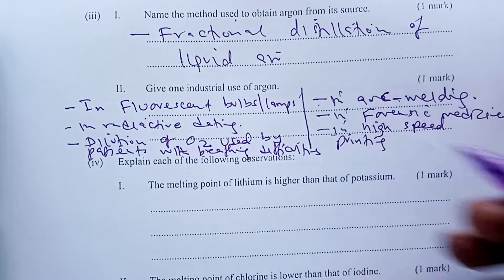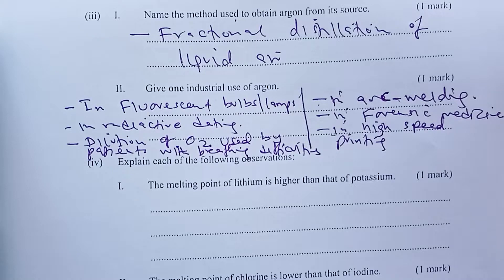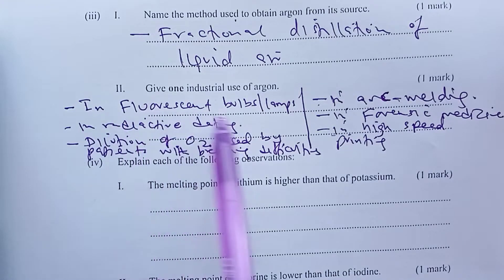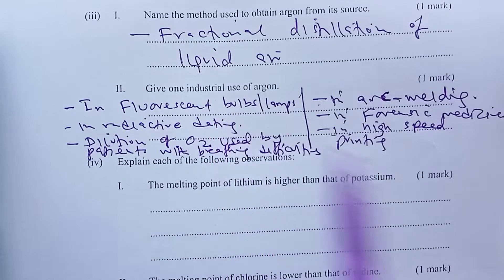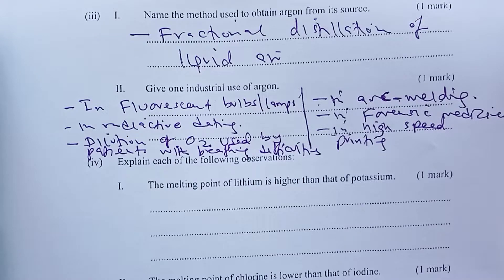When giving uses, avoid wrong commitment. For example, if a student writes 'in the manufacture of fluorescent bulbs,' that would be denied the mark, because it implies the bulb itself is manufactured using argon. Instead, just write 'in fluorescent bulbs' — that has no wrong commitment about where argon is used.